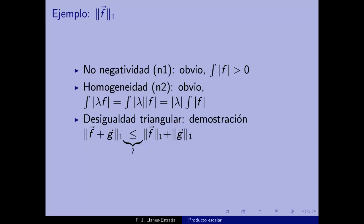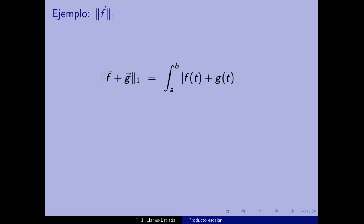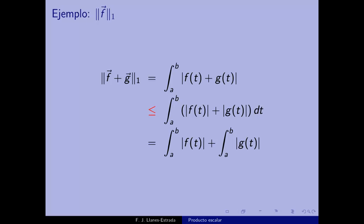¿Y la desigualdad triangular para ‖f‖₁? Debemos demostrar que ‖f+g‖₁ ≤ ‖f‖₁ + ‖g‖₁. Tomamos la integral del valor absoluto de f+g: dentro del valor absoluto, f y g se suman con su signo, por lo que puede haber cancelaciones que hacen la integral más pequeña que la integral de |f|+|g|. Por linealidad de la integral, ∫|f|+∫|g| = ‖f‖₁+‖g‖₁, así que la desigualdad se cumple. Por tanto, ‖·‖₁ es efectivamente una norma.